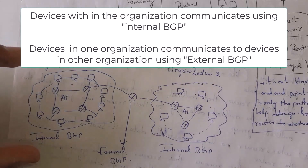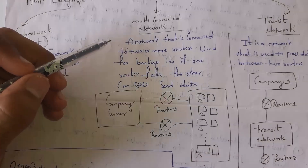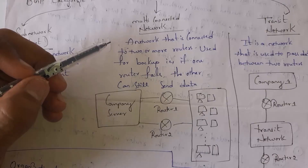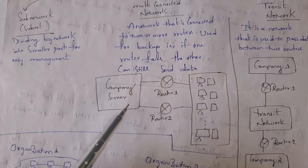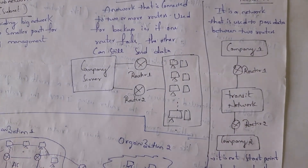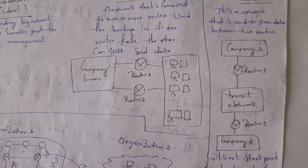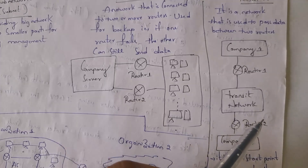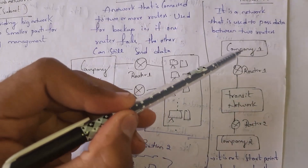The second category is multi-connected network — a network that is connected by using two or more routers. So even if one router fails, a device can still communicate using another router. The third one is transit network. For example, one company is connected to a router, and similarly another company is also connected to a router. The network which is in between these two routers is called a transit network.